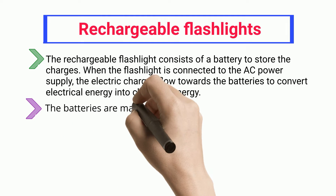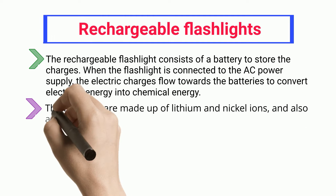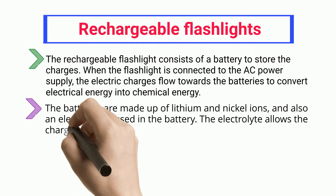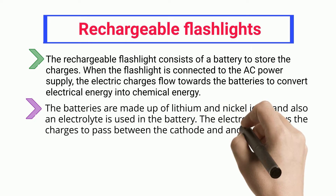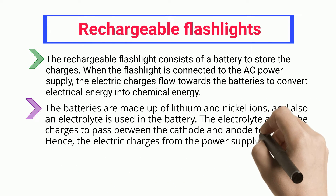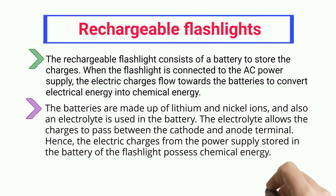The batteries are made up of lithium and nickel ions, and an electrolyte is also used in the battery. The electrolyte allows the charges to pass between the cathode and anode terminal. Hence, the electric charges from the power supply stored in the battery of the flashlight possess chemical energy.